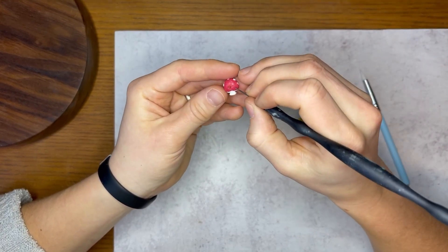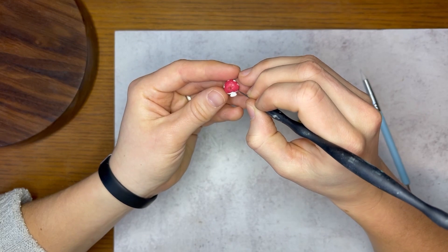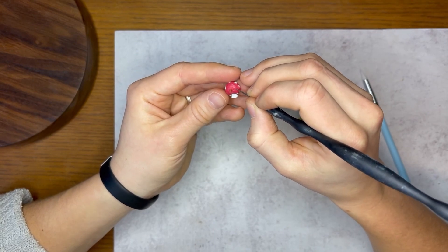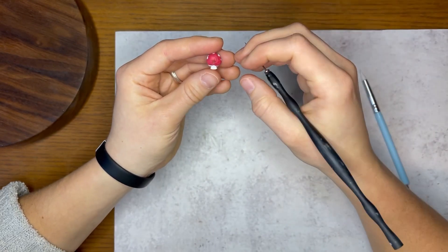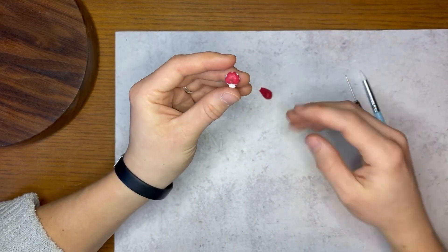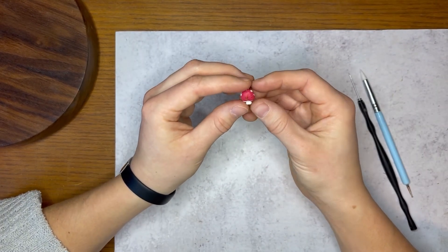So once you have it to your liking, you can sign your name, and then you will bake that again for the recommended length of time, and I usually check it at the halfway point. Just make sure it doesn't burn, because it's a really small amount of clay.